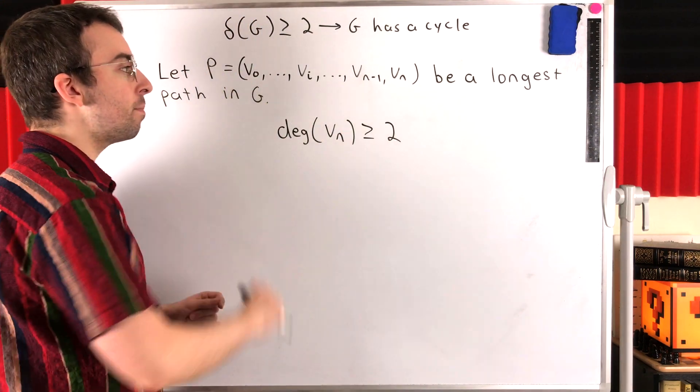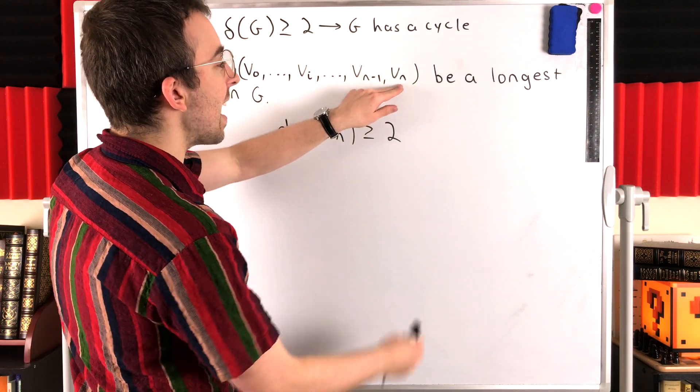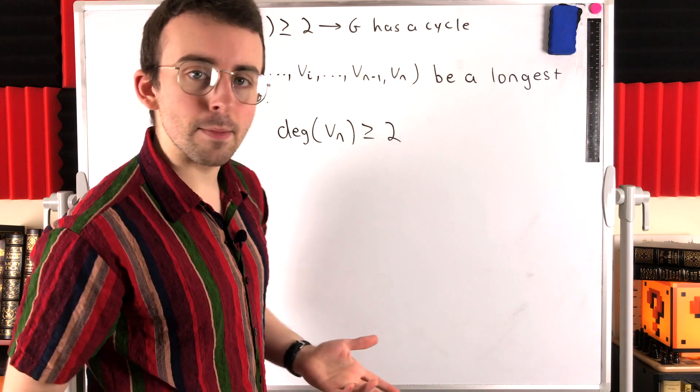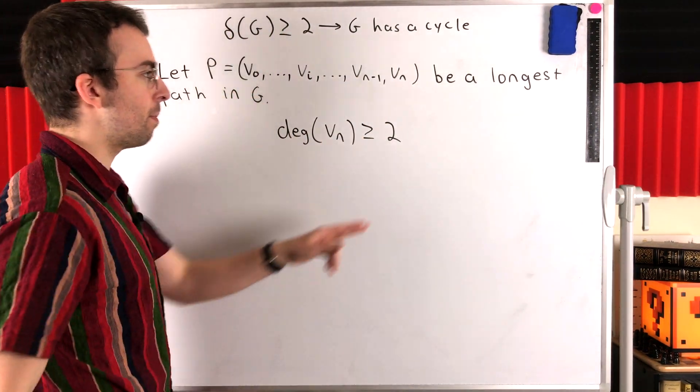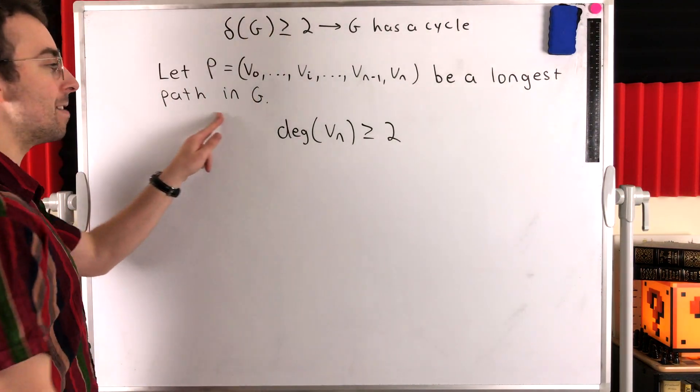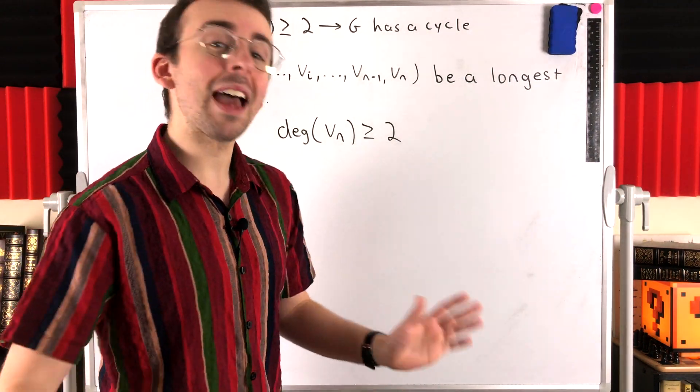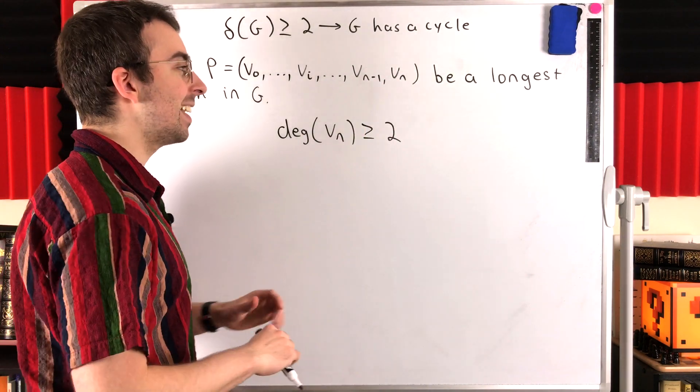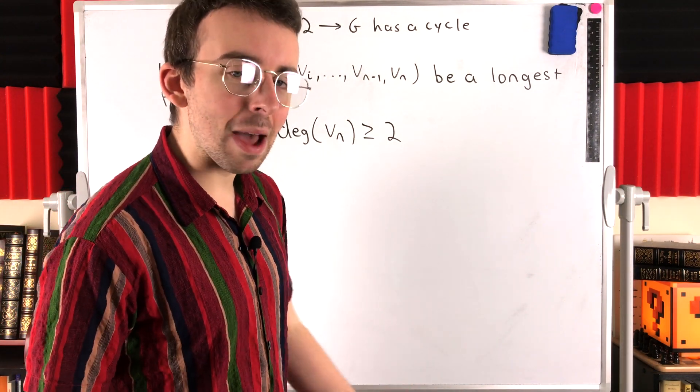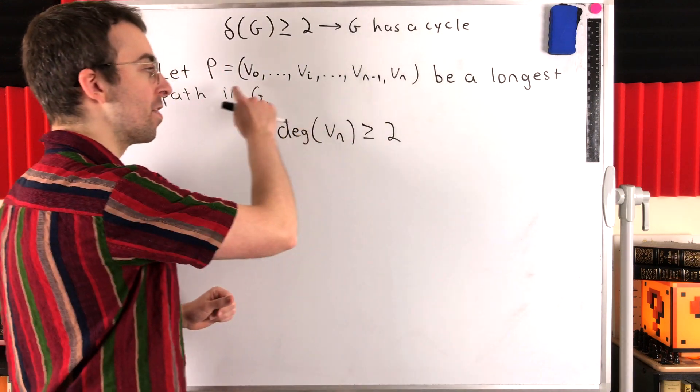then we could extend P by going from VN to that other neighbor that's not on the path. But that would be a path that's longer than P, contradicting P being a longest path. So the other neighbor of VN must be on the path.